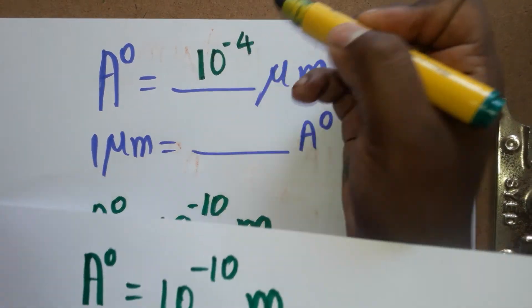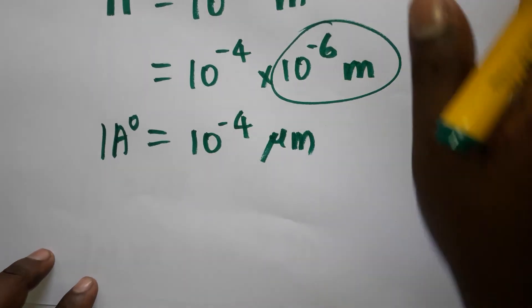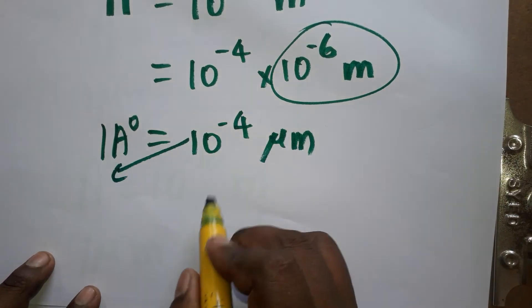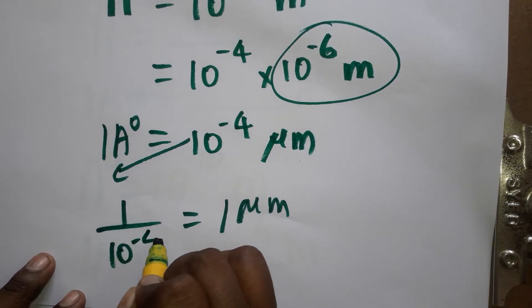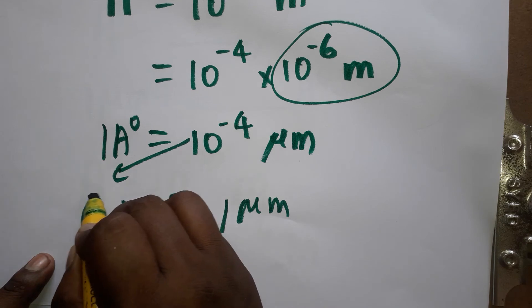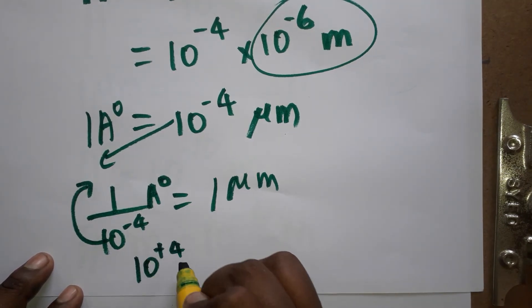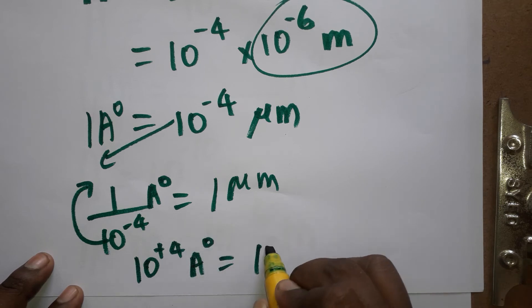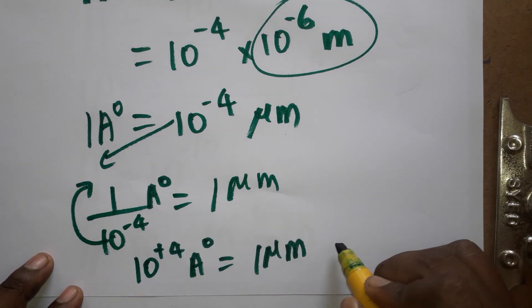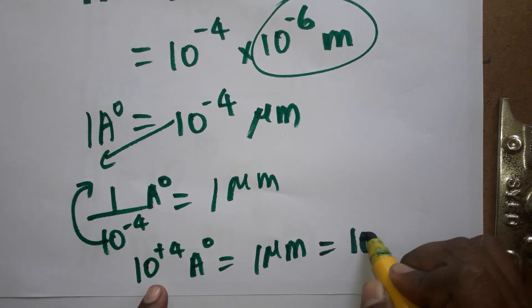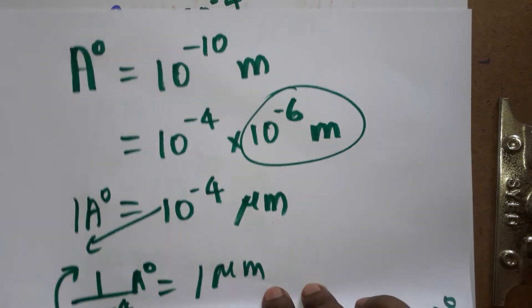Now, one micrometer is equal to how many angstrom units? Since one angstrom unit equals 10 power minus 4 micrometer, bringing it to the denominator gives one micrometer equals one divided by 10 power minus 4 angstrom unit. Moving the denominator to the numerator, minus 4 becomes plus 4, so one micrometer is equal to 10 power plus 4, which is 10,000 angstrom units.